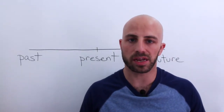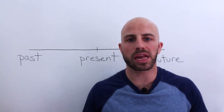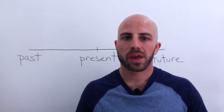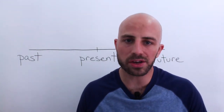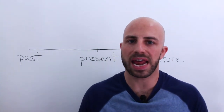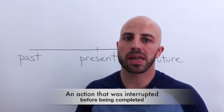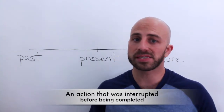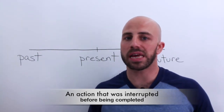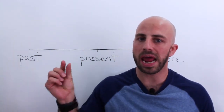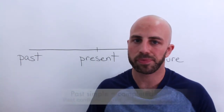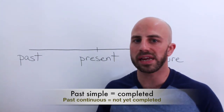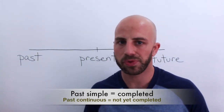Now let's look at the rules so we know when to use the past continuous. Rule number one: we use the past continuous when we're referring to something that happened in the past but it's been interrupted — so it hasn't completed. The past simple talks about actions completed in the past, but the past continuous is used for actions or ideas that have not been completed.